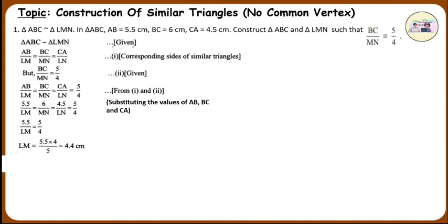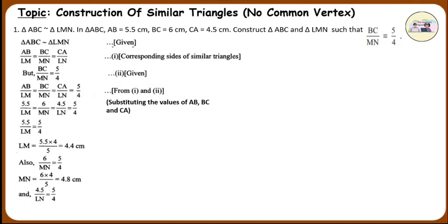Also, 6 upon MN is equal to 5 by 4. Therefore, MN is equal to 6 into 4 upon 5, which is 4.8 cm. And, 4.5 upon LN is equal to 5 by 4. Therefore, LN is equal to 4.5 into 4 upon 5, which is equal to 3.6 cm.